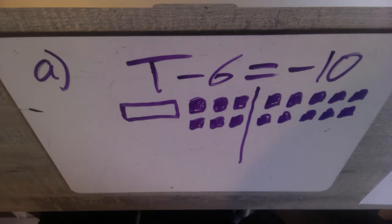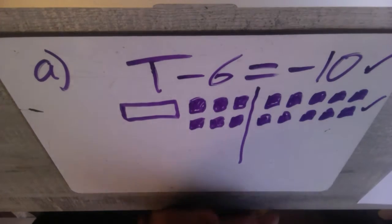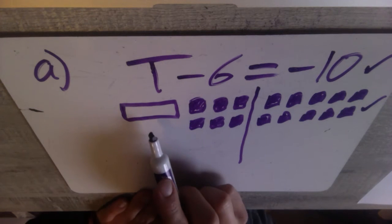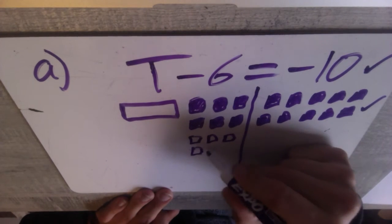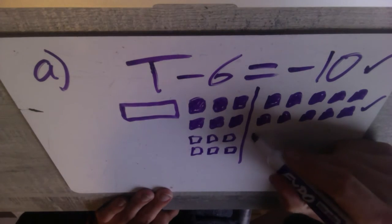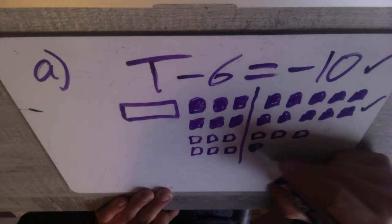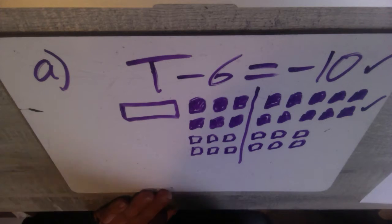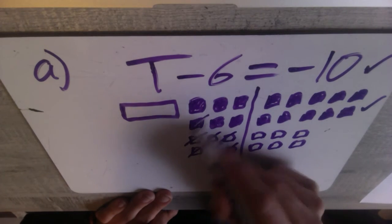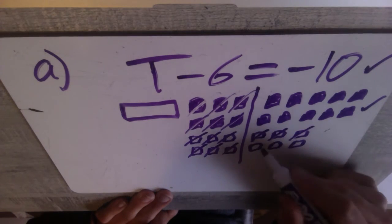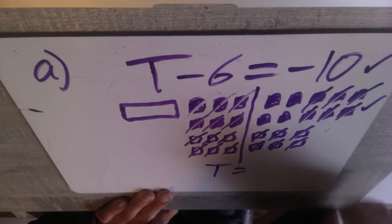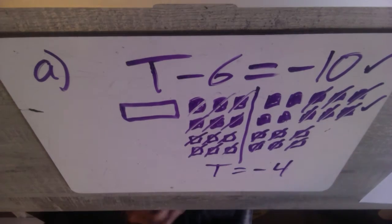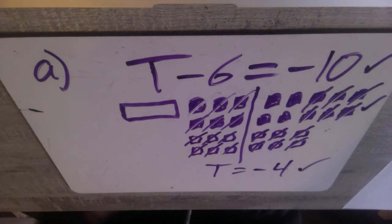Now, after drawing our picture we've got a mark for our equation and a mark for showing our tiles. To find the answer, we get the variable alone by isolating it. To cancel the six negatives we put in six positives on that side, and we've got to do the same to the other side — it's got to balance. Cancel those six positives with six negatives on the left, and cancel six positives with six of the negatives on the right. We're left with T equals one, two, three, four negatives — so negative four.